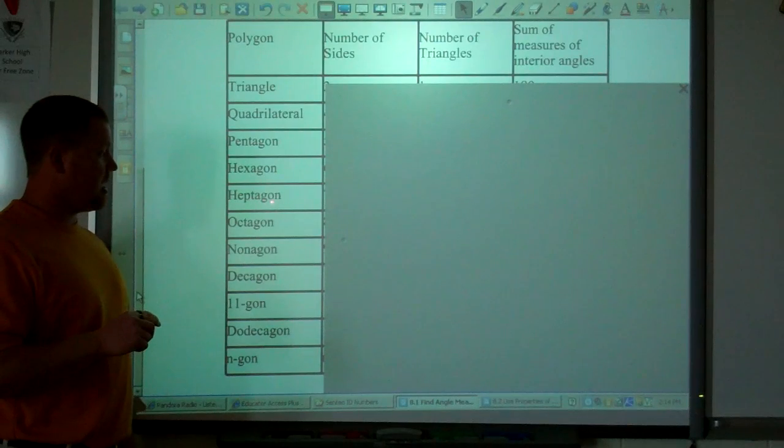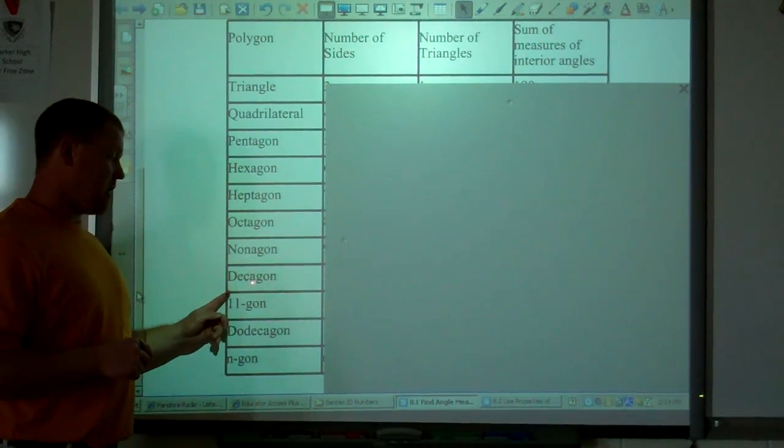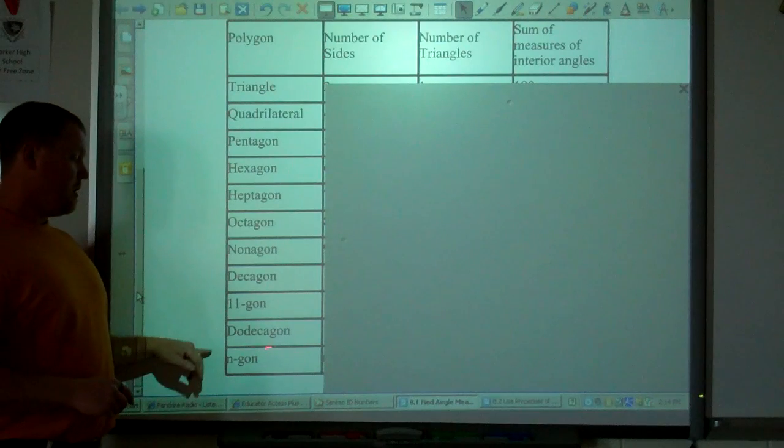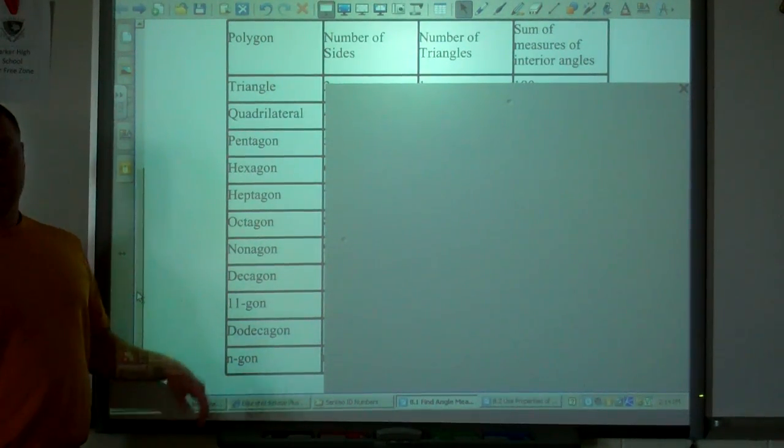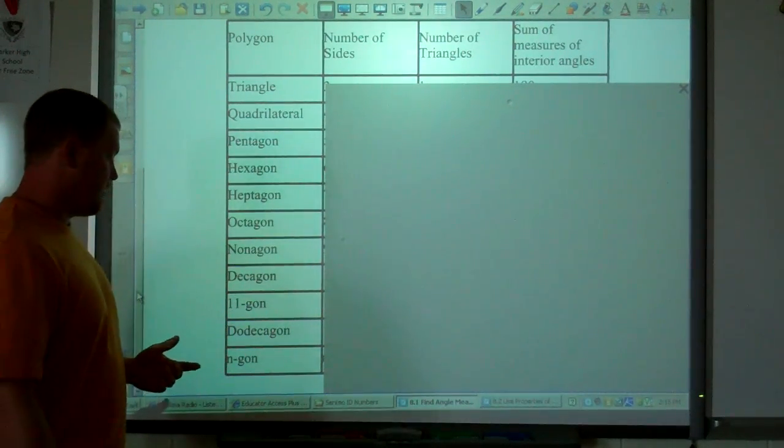hexagon, heptagon, octagon, nonagon, decagon, an 11-gon, dodecagon. That's a figure with 12 sides. Then after that, 13-gon, 14-gon, 15-gon, so on and so forth.